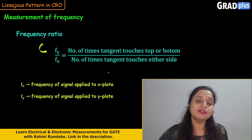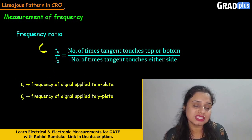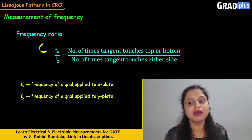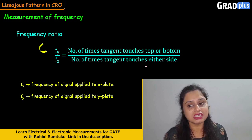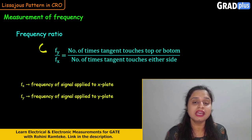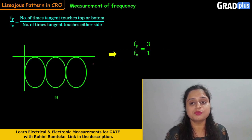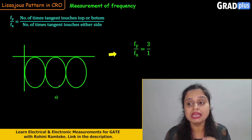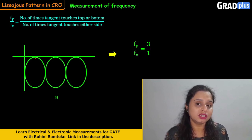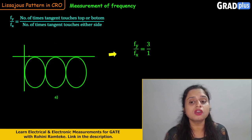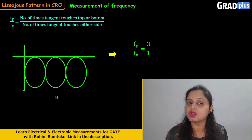Now let us see how to measure frequency. The frequency ratio is given by the formula: fy/fx = (number of times a tangent touches the top or bottom) divided by (number of times a tangent touches either side), where fx and fy are the frequencies of the signals on the X plate and Y plate respectively. To apply this, draw tangents at the top or bottom and on either side of the Lissajous pattern.